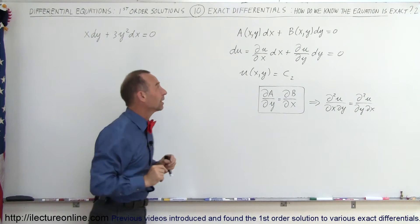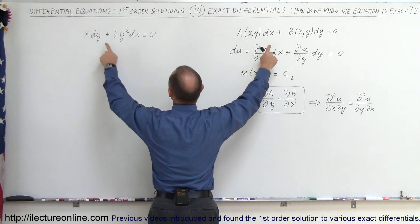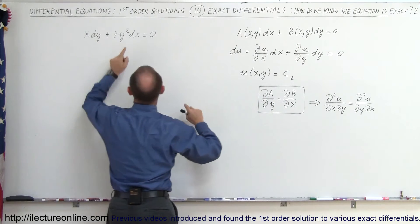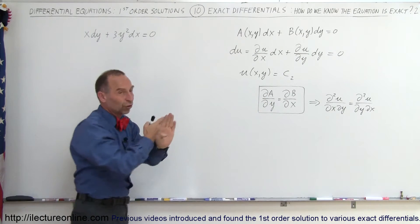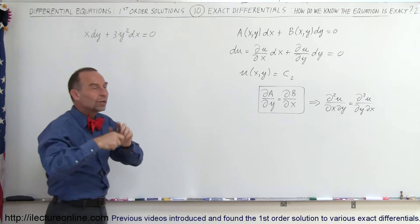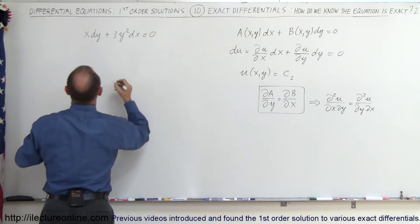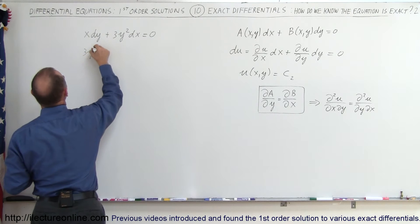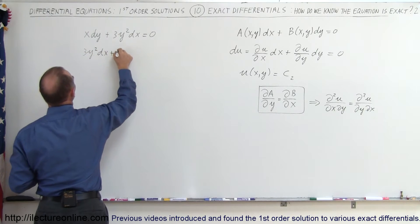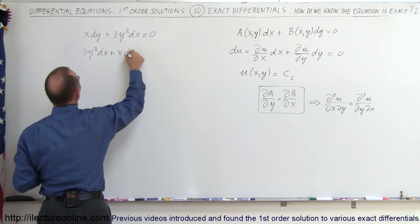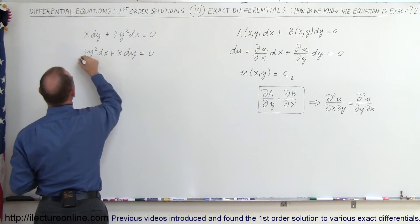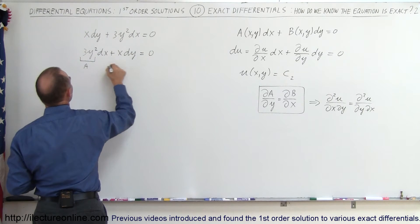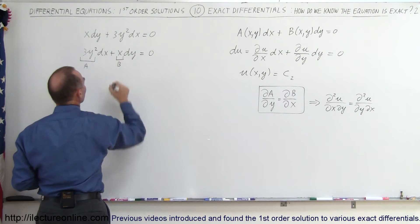We have to be careful because notice here we have a dx and a dy in reversed order, so let's rearrange the equation. We can write 3y² dx plus x dy is equal to zero, such that this is our A and this is our B.